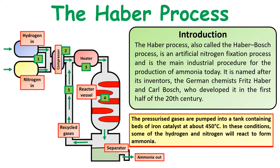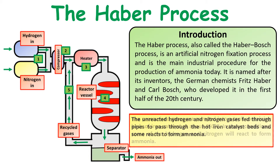The pressurised gases are then pumped into tanks containing iron catalyst beds. A catalyst speeds up the reaction without being used up in the reaction itself. The gases are also heated to about 450°C, which speeds up the reaction. The unreacted nitrogen and hydrogen gases are recycled back into the system to make it more efficient, and the liquid ammonia is cooled down and separated off as a liquid at the end.